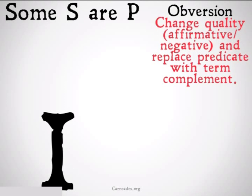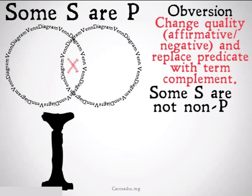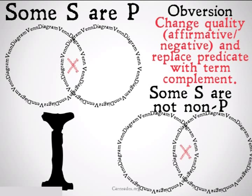Obversion for the I statement: 'Some S are P' — we put an X in the middle. 'Some S are not non-P' is the obverse. Clearly, with that double negative in there, this is just basically the same statement. So clearly, our diagrams are going to be the same.